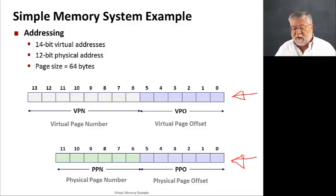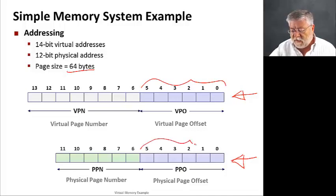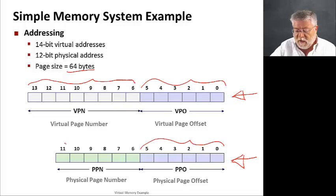Given that we have a 64-byte page size, our virtual page offset will be 6 bits, as will our physical page offset, because those pages are exactly the same size. The remaining bits are the virtual page number and the physical page number, 8 and 6 bits, respectively.